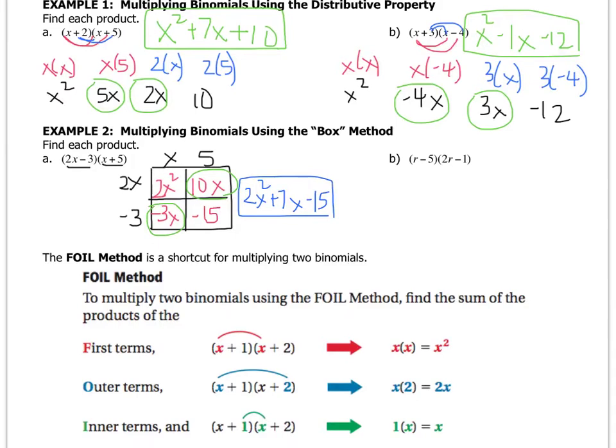If you want to try letter B on your own, give it a shot. If not, follow me. Make my box r minus 5 and 2r minus 1. It does not matter which one goes on the top and which one goes on the side. 2r times r is 2r squared. r times negative 1 is negative 1r. Negative 5 times 2r is negative 10r. And negative 5 times negative 1 is positive 5. When you combine your terms right here, you get 2r squared minus 11r plus 5.